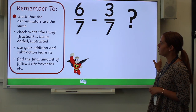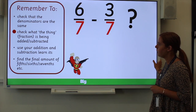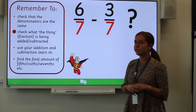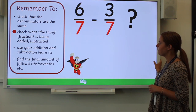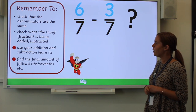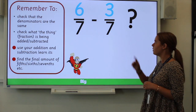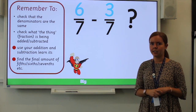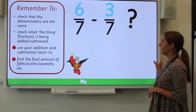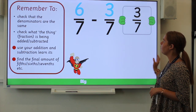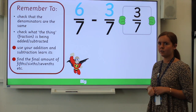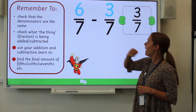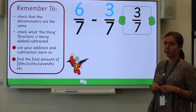Check that the denominators are the same — we can see that they are. Check if it's being added or subtracted — we've got a subtraction sign, so we know they're being subtracted. You can pause the video now and have a go. If you said three-sevenths, well done — you would be absolutely right, because six take away three is three and our denominator stays the same.